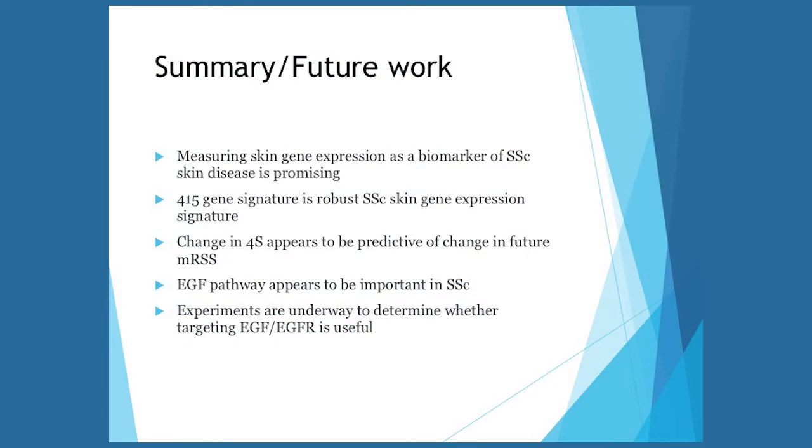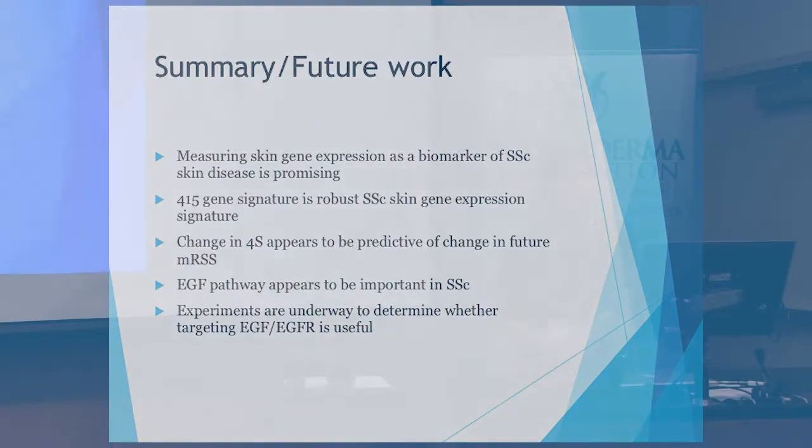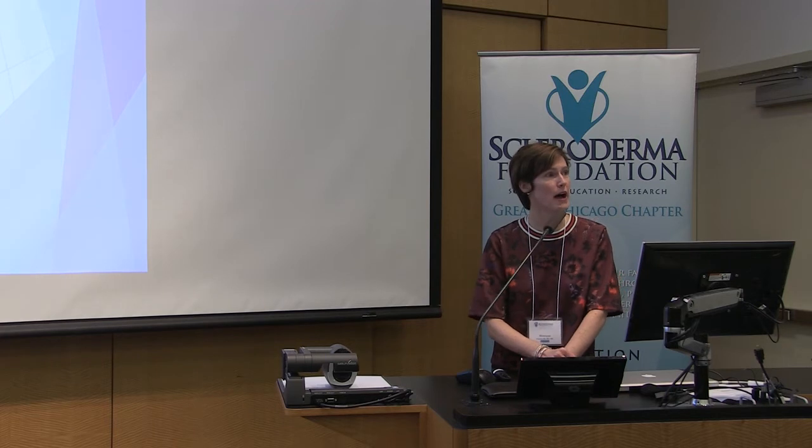In summary: measuring gene expression in skin appears to be a promising biomarker. We have a 415-gene signature identified in scleroderma patients that we're still validating but looks promising. We have the Scleroderma Skin Severity Score — the 4S — that appears predictive of future change in skin disease. We've identified an EGFR pathway as a new potential treatment target, and experiments are ongoing right now with mice being treated with these drugs to see if it helps with mouse skin and mouse lung.